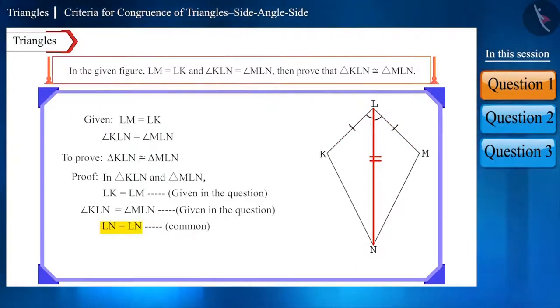And, since this side is the common side of the two triangles, it will be congruent. We can write it like this also. Therefore, triangle KLN is congruent to triangle MLN.